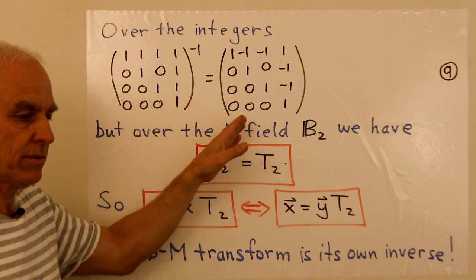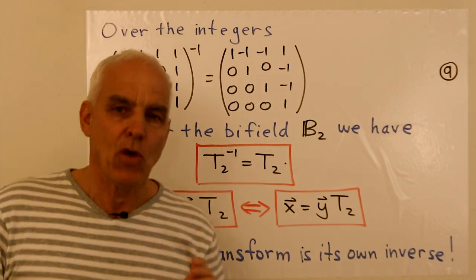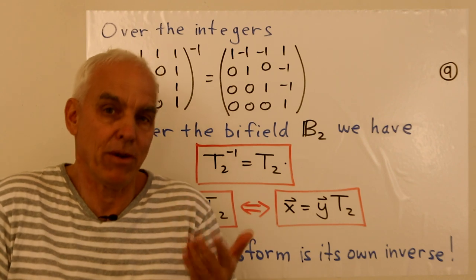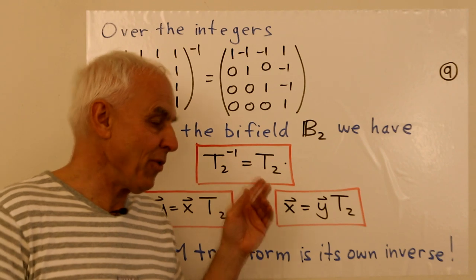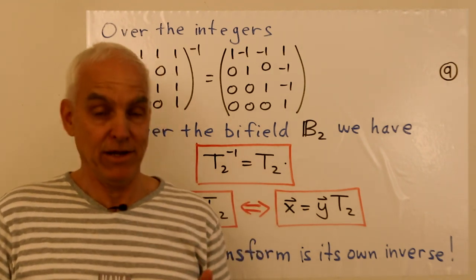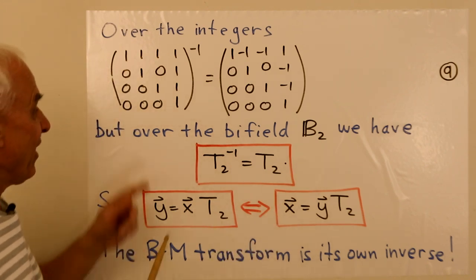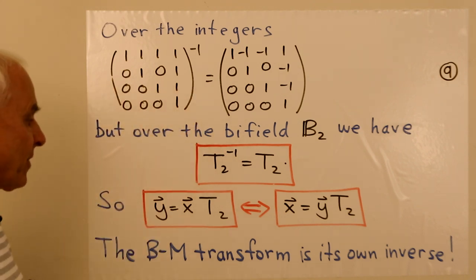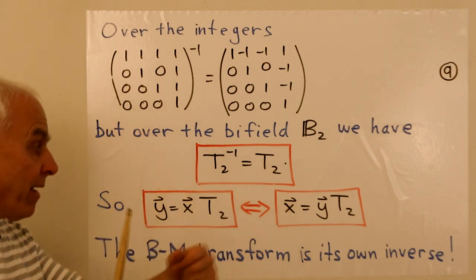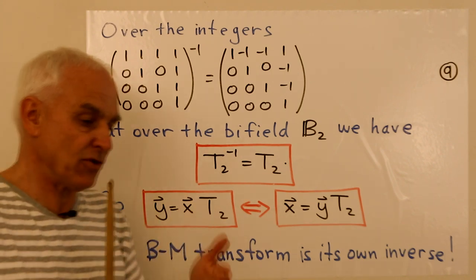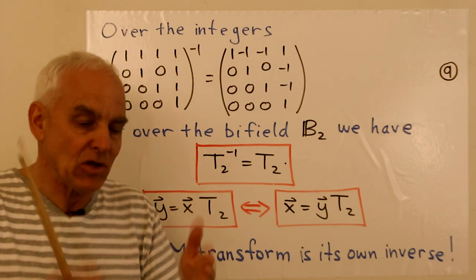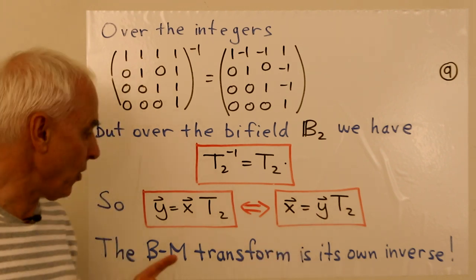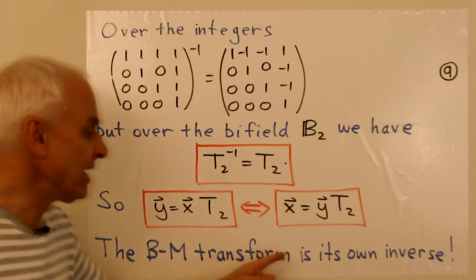This is over the integers, or over the rational numbers. But actually, we're working in a context over a bifield, over the bifield B2, with just entries 0 or 1. That's really where we're doing our arithmetic. And so, in this scenario, 1 and -1 are the same. 1 equals -1. So, over the field, or the bifield B2, the inverse to this T2 matrix is itself. It's equal to itself, in this case. So, that means that if y equals x times T2, then, because these vectors are actually vectors consisting of zeros and ones, and we're working in the algebraic framework of the bifield, then we can invert this to get that x equals y times T2. So, the Boole-Mobius transform is its own inverse.